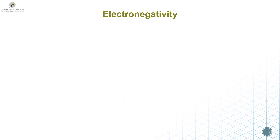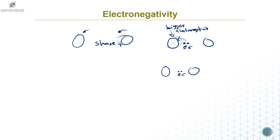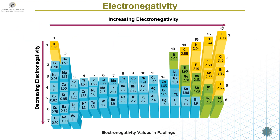Imagine you have two atoms: this atom has an electron and this atom has an electron and they share it between themselves. These two shared electrons are sometimes closer to one atom than the other — because that atom has bigger electronegativity, the electrons will tend to spend more time near it. If the atoms have the same electronegativity, the electrons are shared equally in the middle. We'll talk about this more in Module 7.